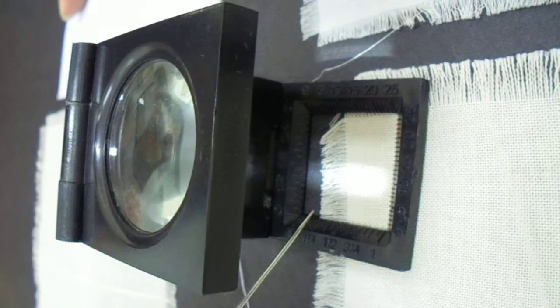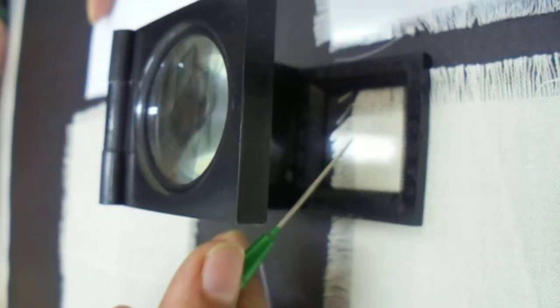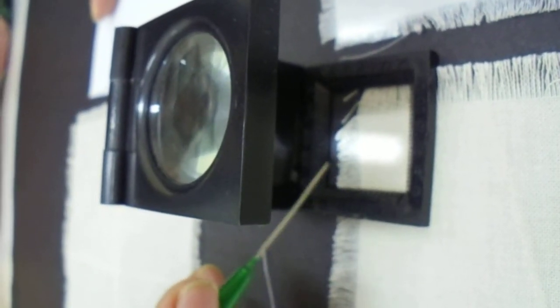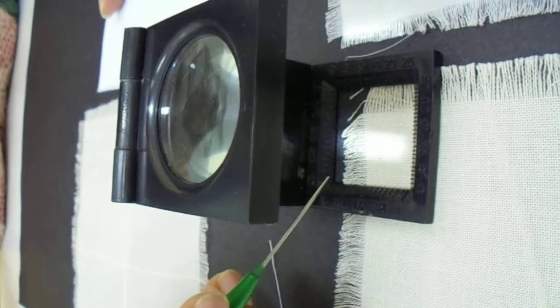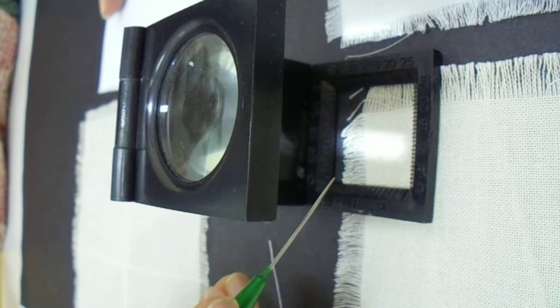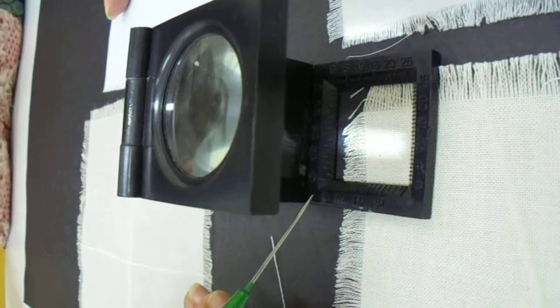For example if this is 58 yarns and the weft yarns are 60 you just need to put a multiplication sign in the center. You are not going to multiply whatever you get in warp and weft because this is just an absolute number.